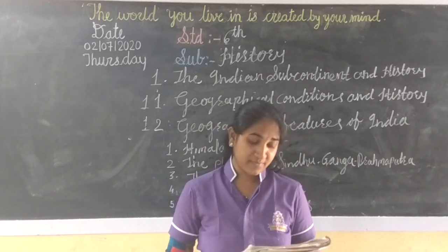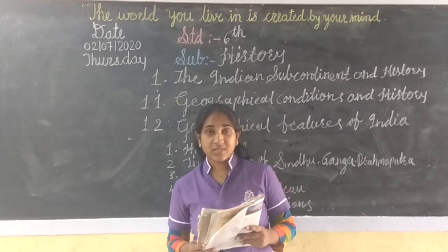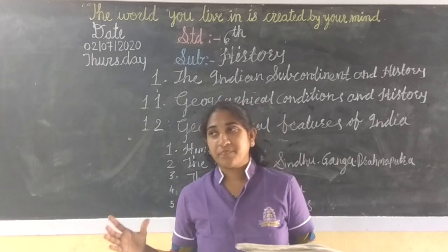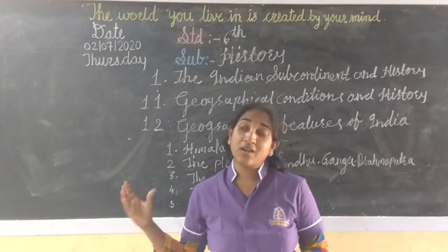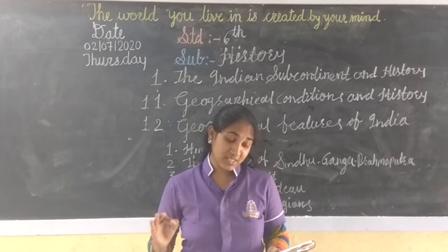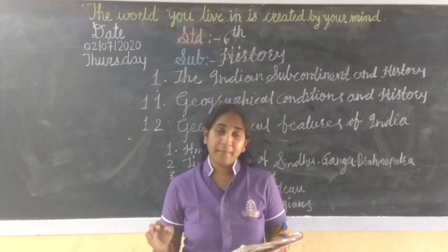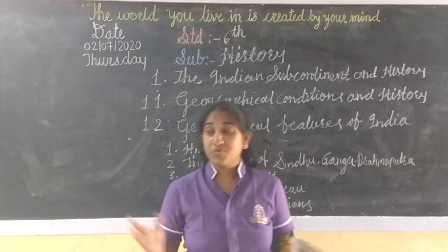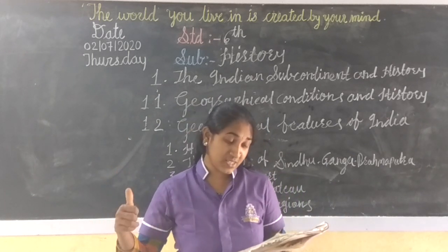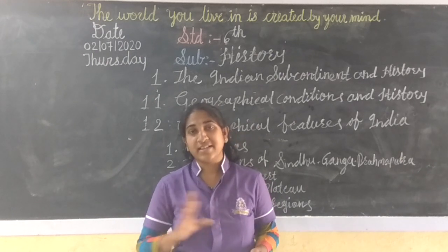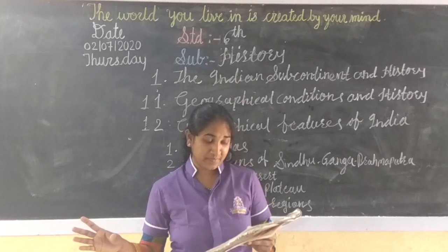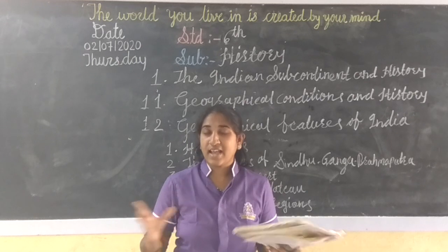The third region is the Thar Desert, which is spread across Rajasthan, Haryana, and some parts of Gujarat. A part of this desert also lies in Pakistan. The desert has the Sutlej River to its north, the Aravalli Mountain ranges to its east, the Rann of Kutch to its south, and the Indus River — also called the Sindhu — to its west.